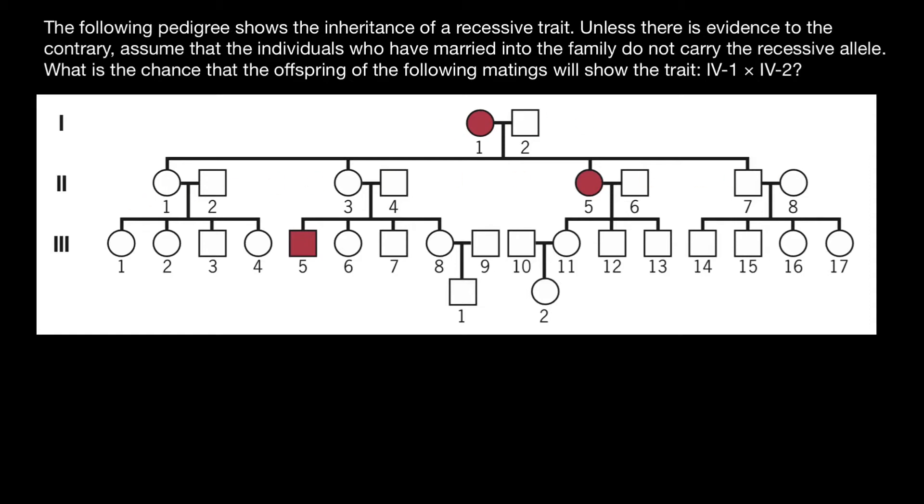Generation 1, generation 2, generation 3, generation 4. We are looking for the probability for these people if they would marry to have an affected child. Where do we start? We can start from this family. We see that one of the children is affected, so has genotype small a, small a. But parents are phenotypically normal.